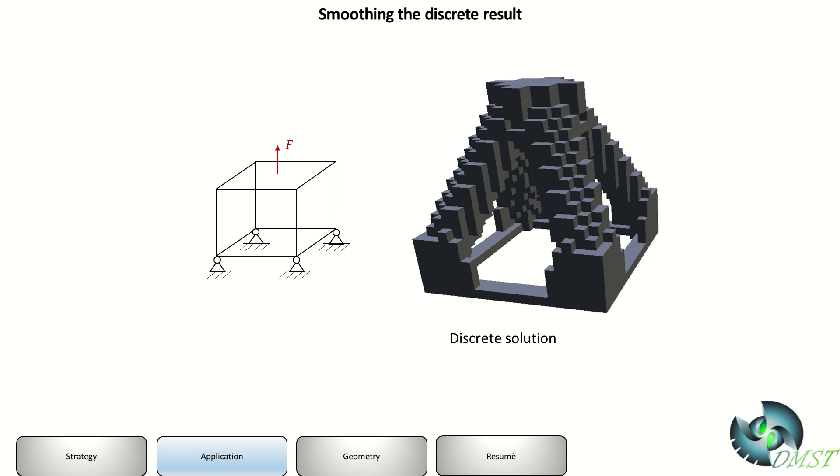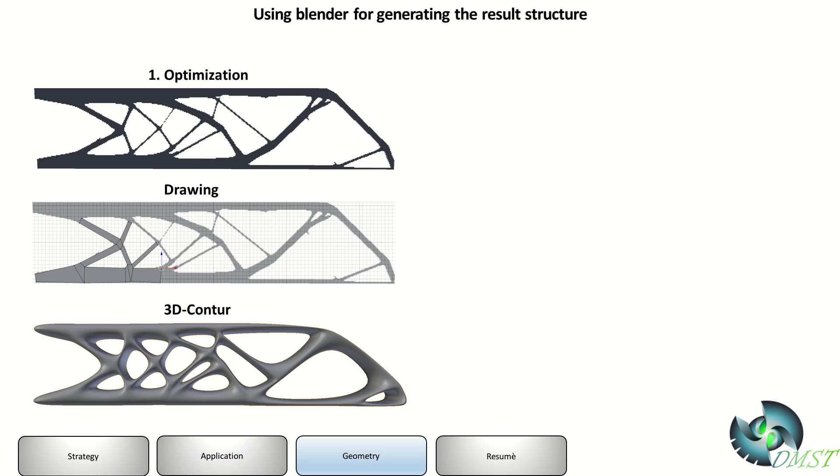The question is how can we smooth it. The first way I'll show you is we can draw it and use Blender, an open source animation software. We see a 2D problem and we only need to draw some planes around the 2D program, extrude it, and then we get this 3D contour. This is really easy. If you are good in Blender, you need only 10 minutes for this problem.